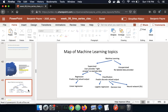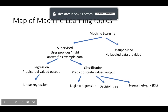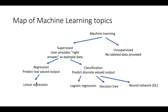Machine learning topics where linear regression falls are under this branch here. Machine learning can basically be split into supervised and unsupervised learning. Supervised learning can be split into regression and classification — we're either going to predict real-valued output or discrete-valued output. Linear regression is basically the idea of: I have a plot with two axes x and y, and I want to figure out for any given x value what is the corresponding y value. It's basically just fitting a line to a set of points.